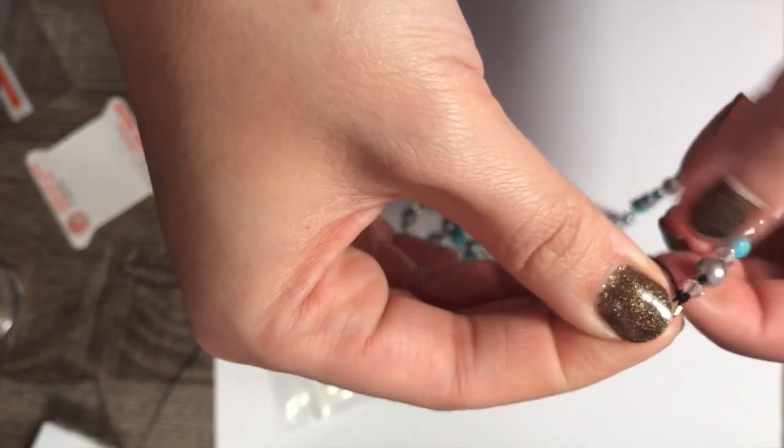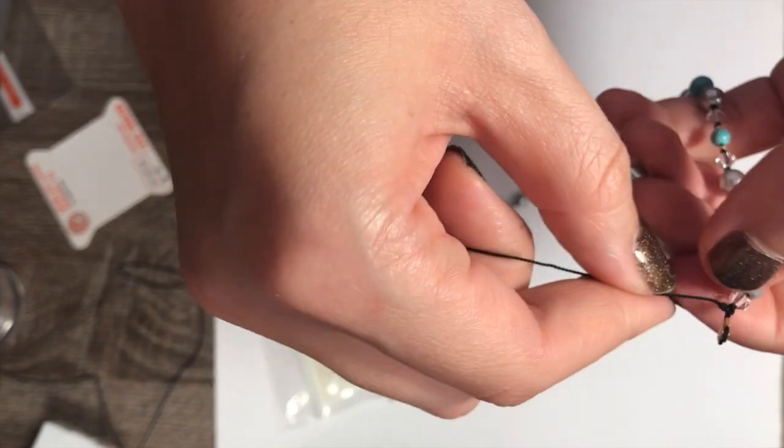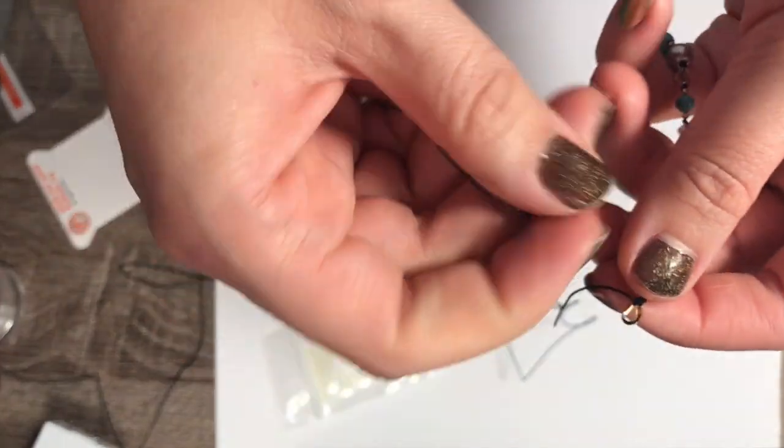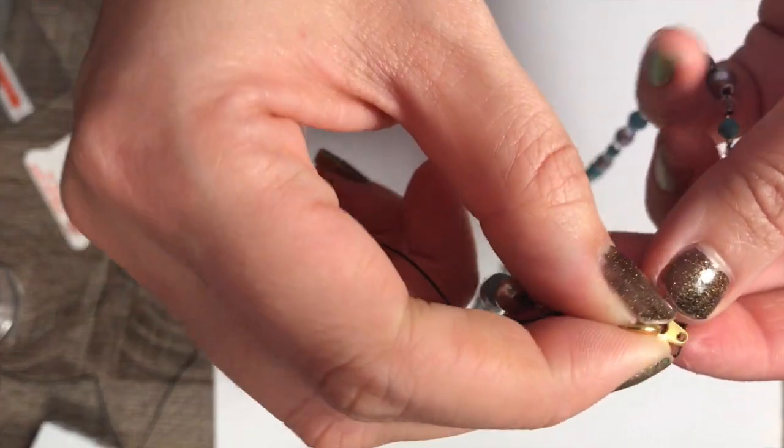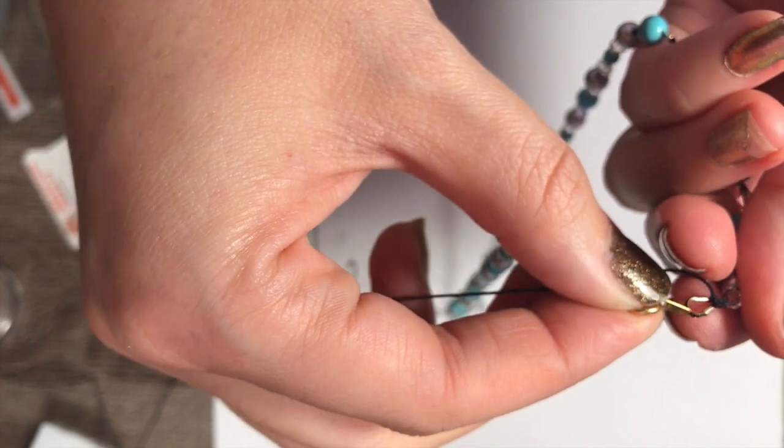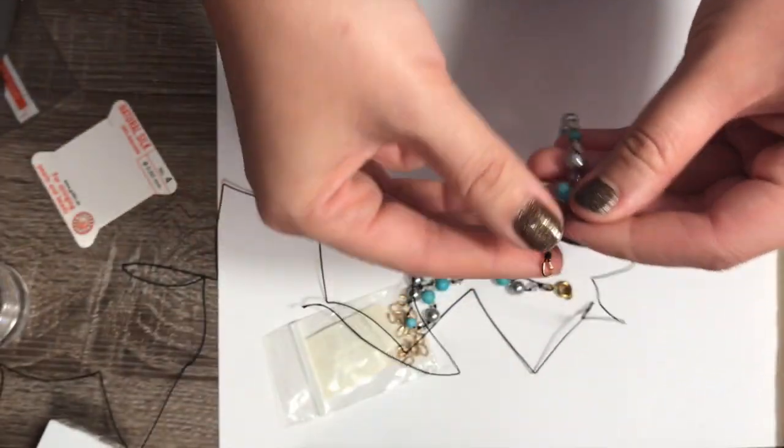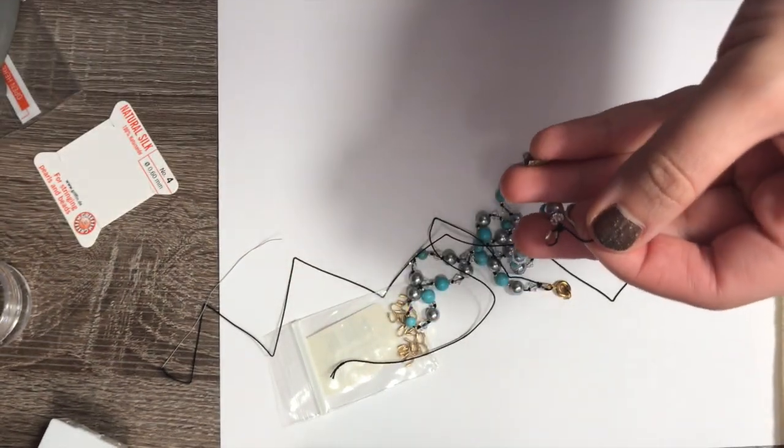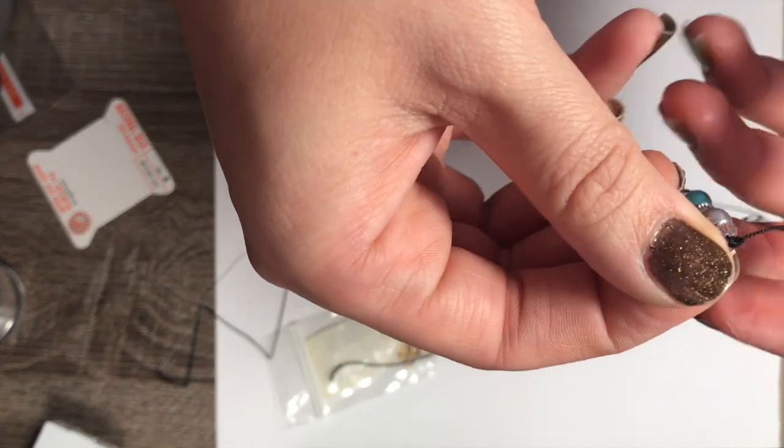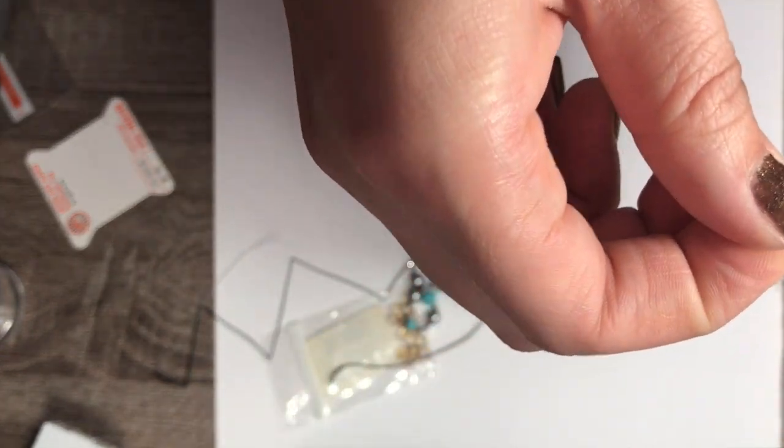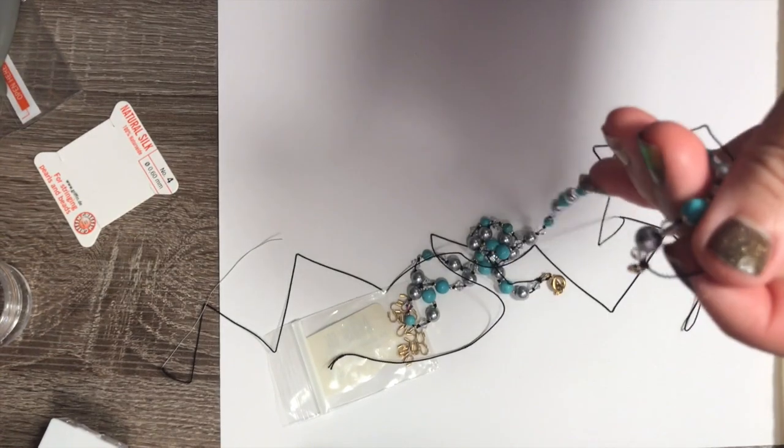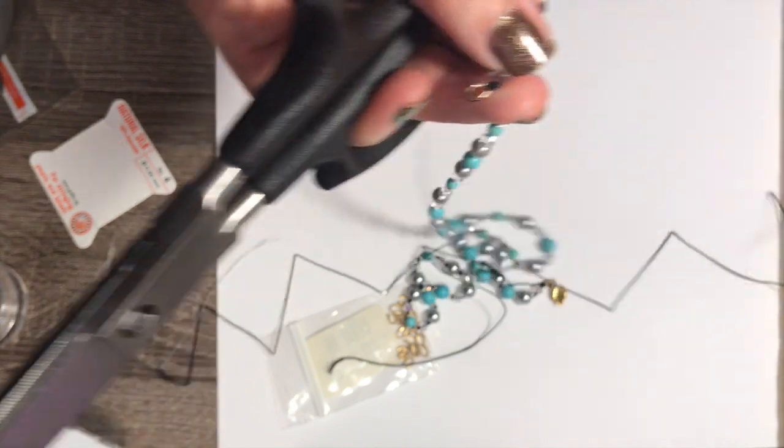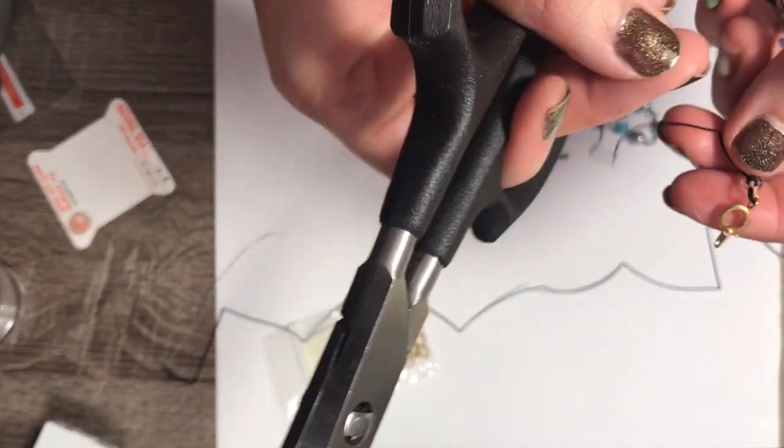And then we can trim the excess string. I'm going to connect these with a jump ring—I don't show it here, but I just have a little gold jump ring. I open it and I attach it together. When you cut the string, make sure you cut as close as possible to the knot, like that. And then on the other end.